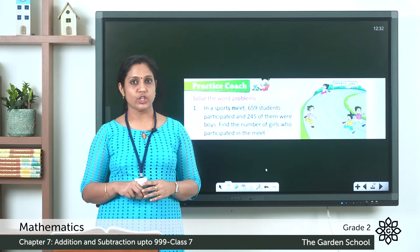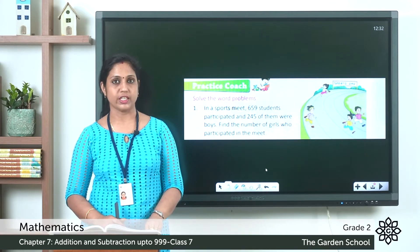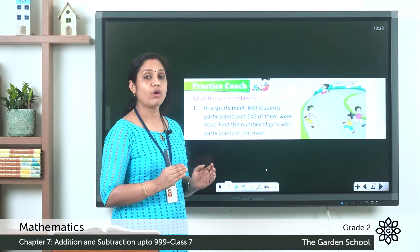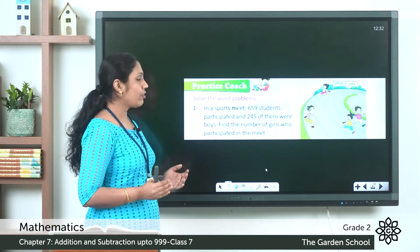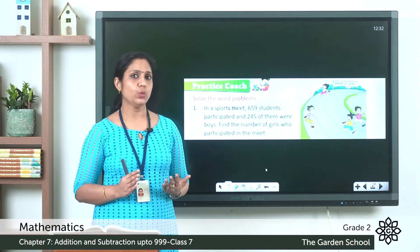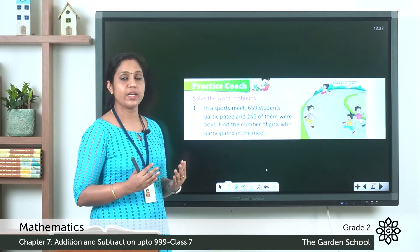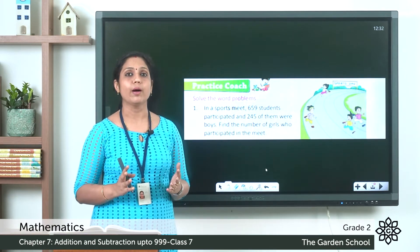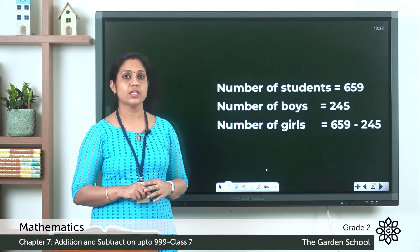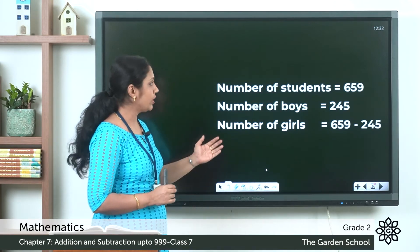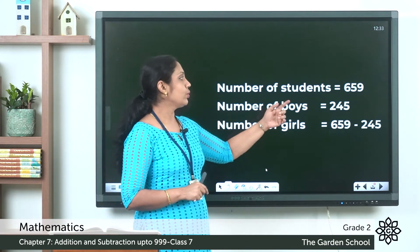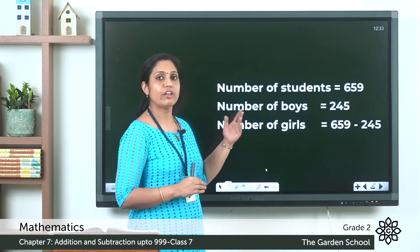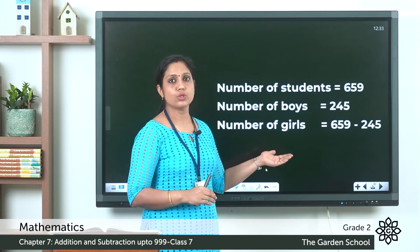Let's look at question number 1 on textbook page 106. In a sports meet, 659 students participated and 245 of them were boys. Find the number of girls who participated. The total students who participated is 659, out of which 245 were boys, and we have to find the number of girls. The first step: total number of students is equal to 659. Number of boys is equal to 245. We find the number of girls by subtracting 245 from 659.